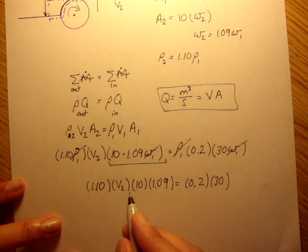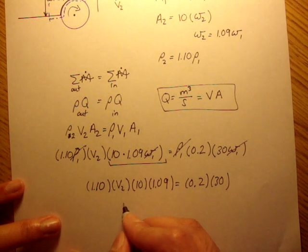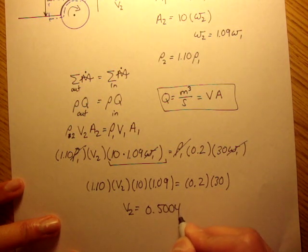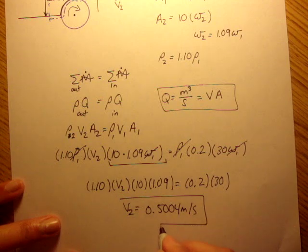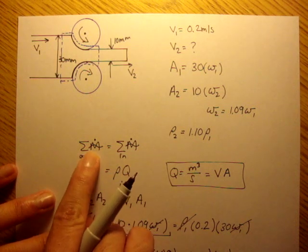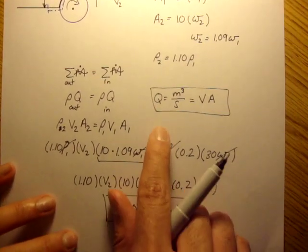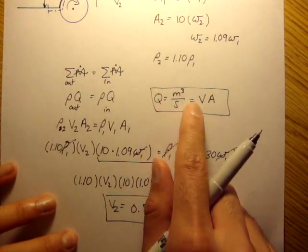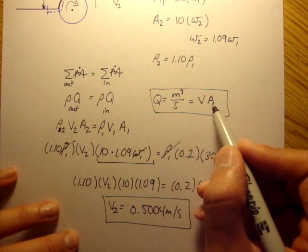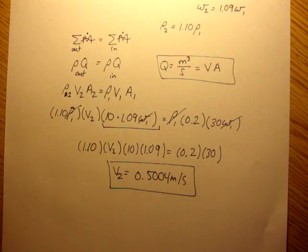So if we solve this out for velocity, velocity 2, we get 0.5004 meters per second. That's the velocity coming out of the control volume. And we used mass coming out is equal to mass coming in. We said q is equal to volumetric flow rate, which is just a volume per second. And we plugged that in, and we got v2 is equal to 0.5 meters per second.